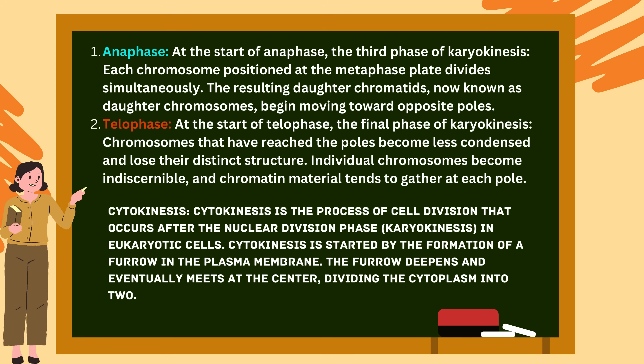Cytokinesis is the process of cell division that occurs after the nuclear division phase (karyokinesis) in eukaryotic cells. Cytokinesis is initiated by the formation of a furrow in the plasma membrane. The furrow deepens and eventually meets at the center, dividing the cytoplasm into two.